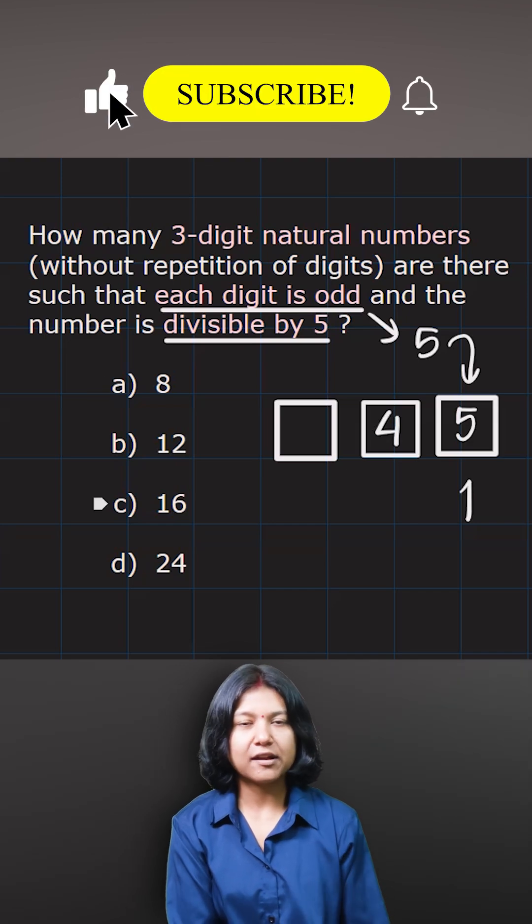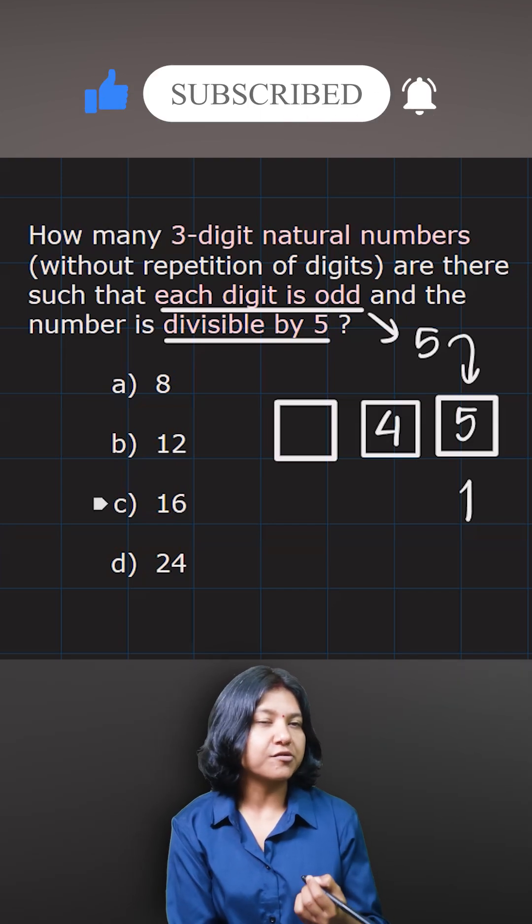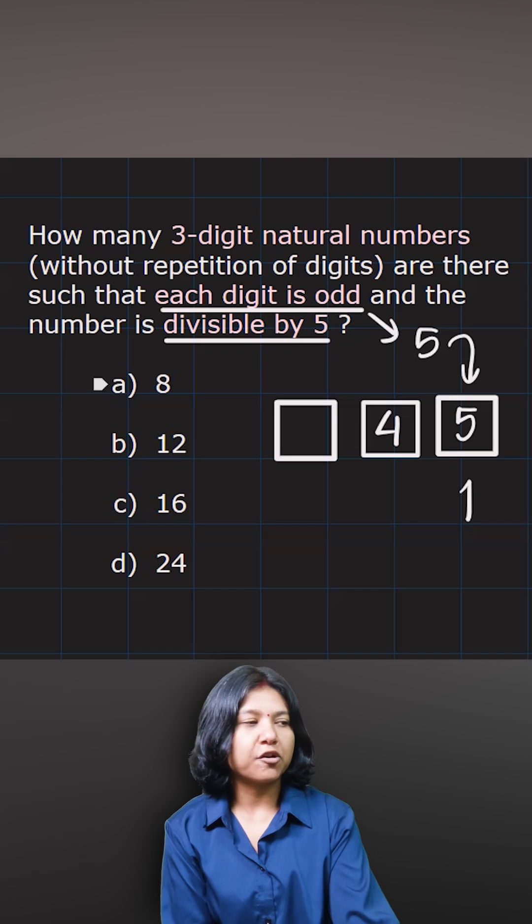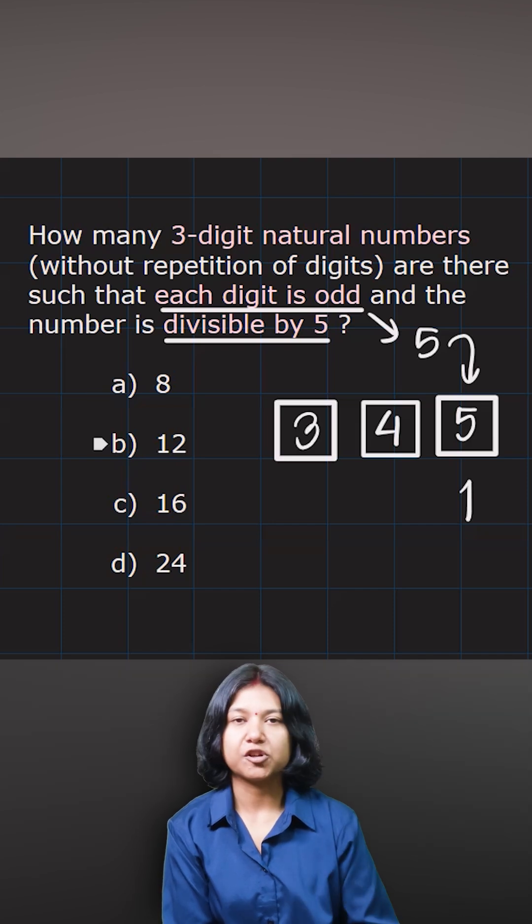So I have four options to fill up the second place, while because I don't want the digits to repeat, I will have only three options filling up the first place.